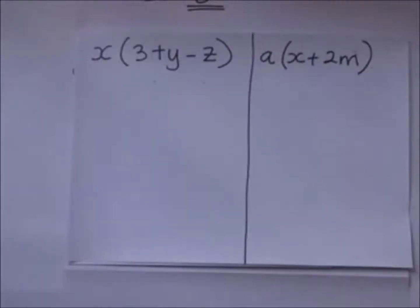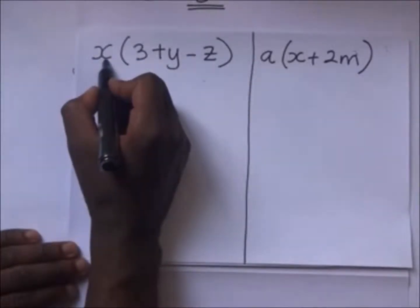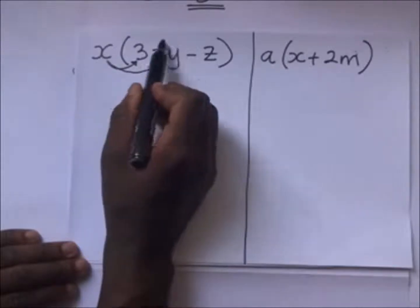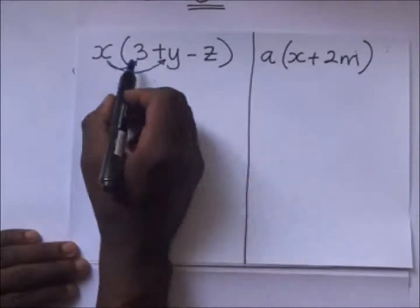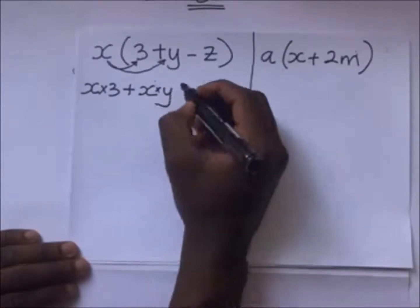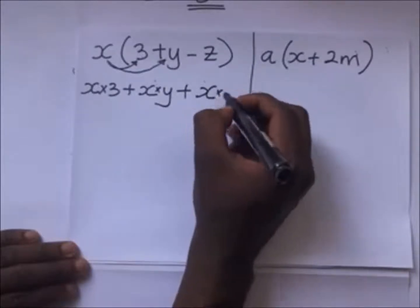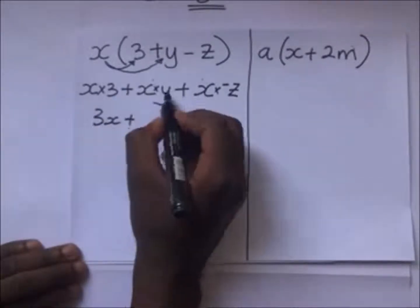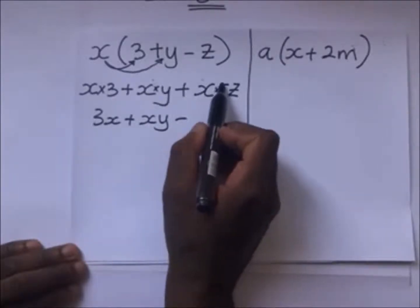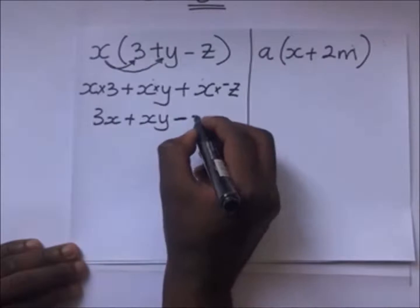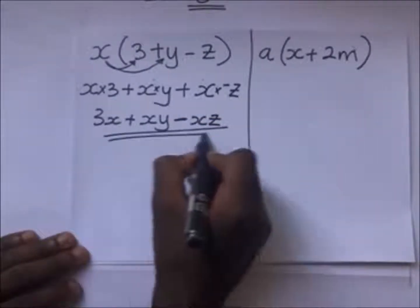We have another expression: x(3 + y - z). We open brackets by taking x outside and multiplying it with each term inside. So it's x times 3, plus x times positive y, plus x times negative z. This gives 3x plus xy. Then positive x times negative z — a positive and a negative give a negative — so it's minus xz. The answer is 3x + xy - xz.